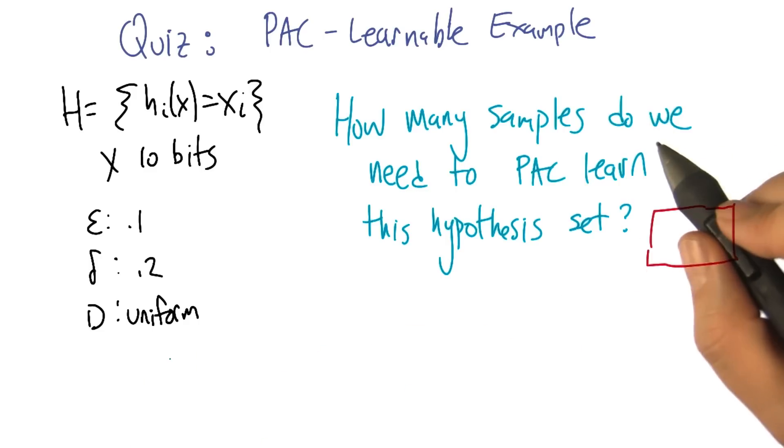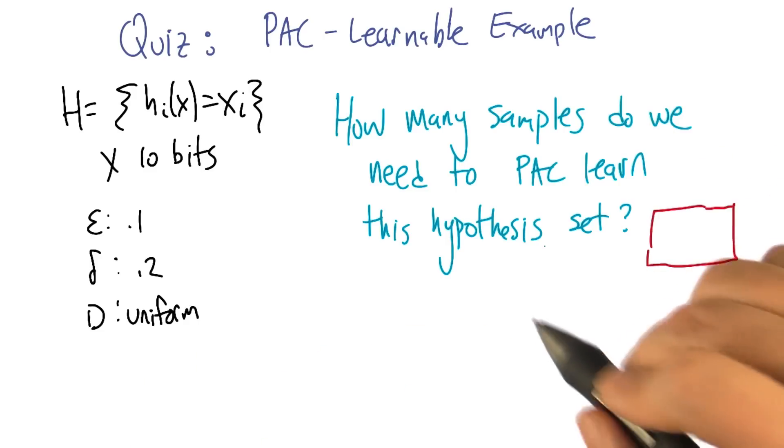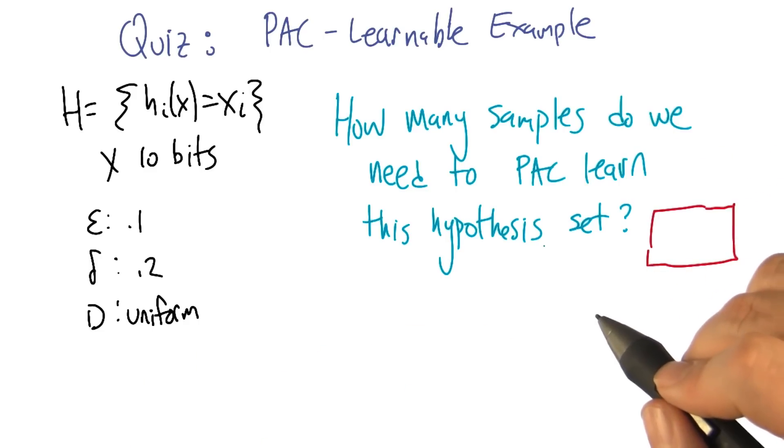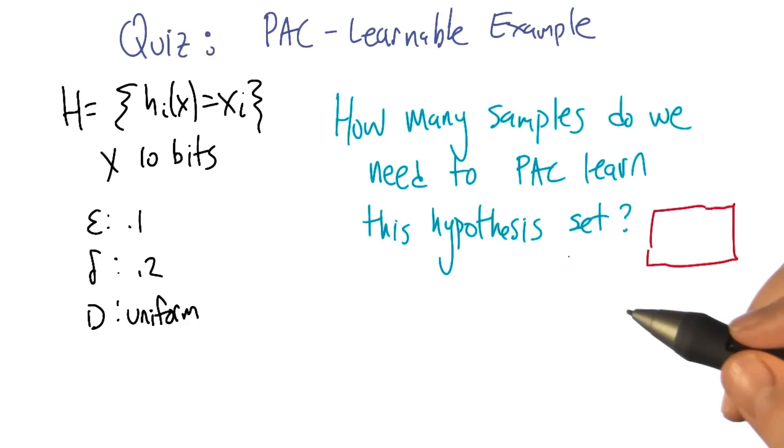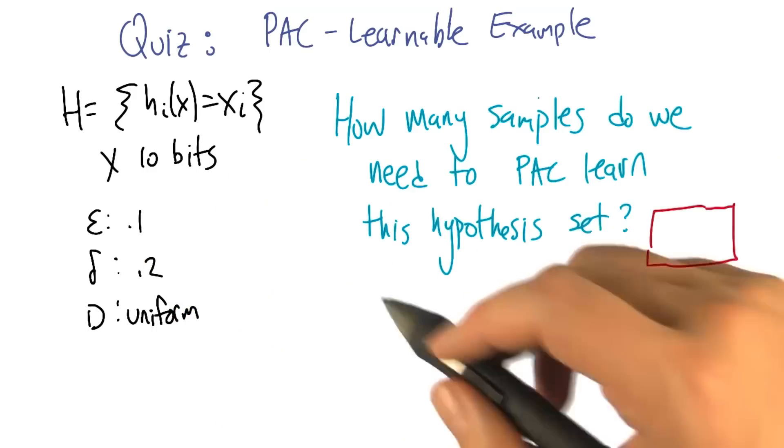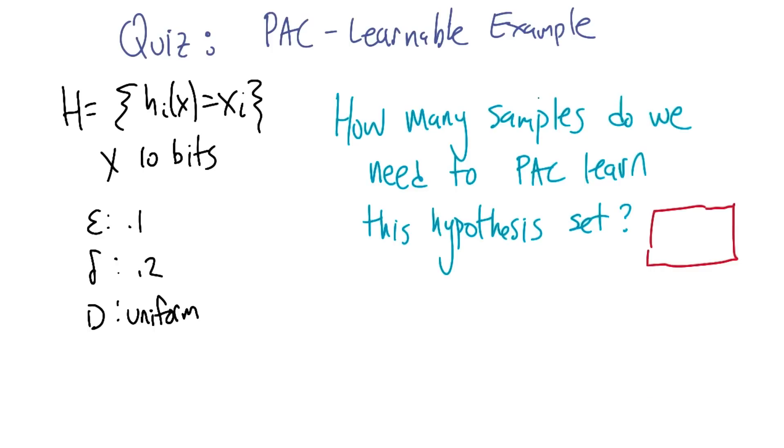So given this setup, how many samples do we need to PAC learn this hypothesis set? And remember the algorithm that we're going to use is we're going to draw a sample of the size that we want, then we are going to be confident that we've epsilon exhausted that version space. And so anything left in the version space should have low error. And that procedure should fail with probability no more than 0.2.